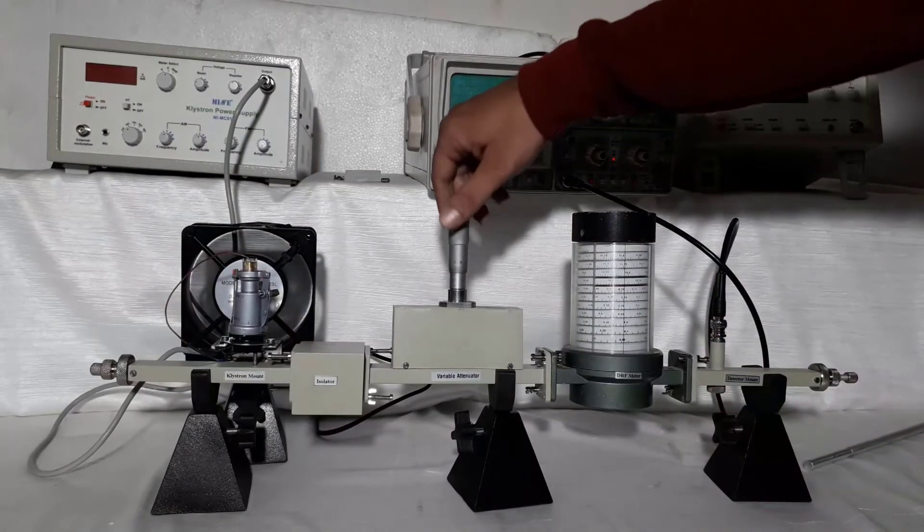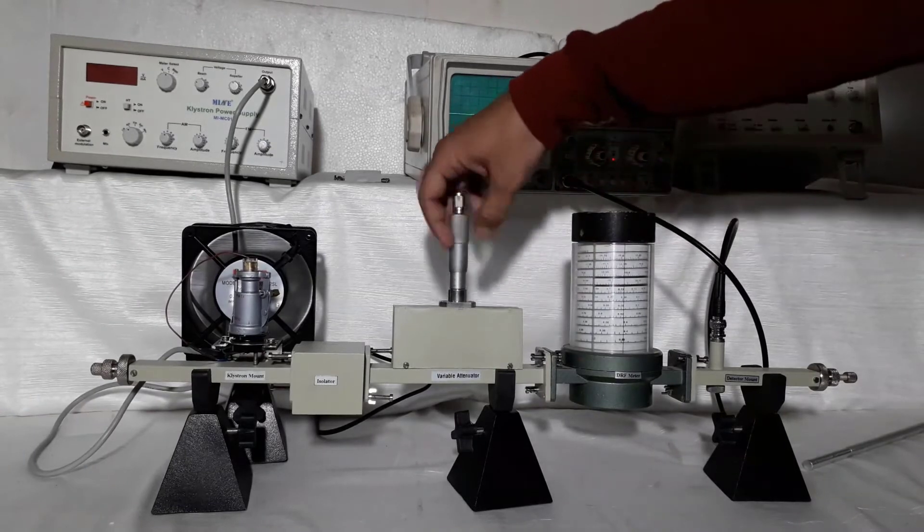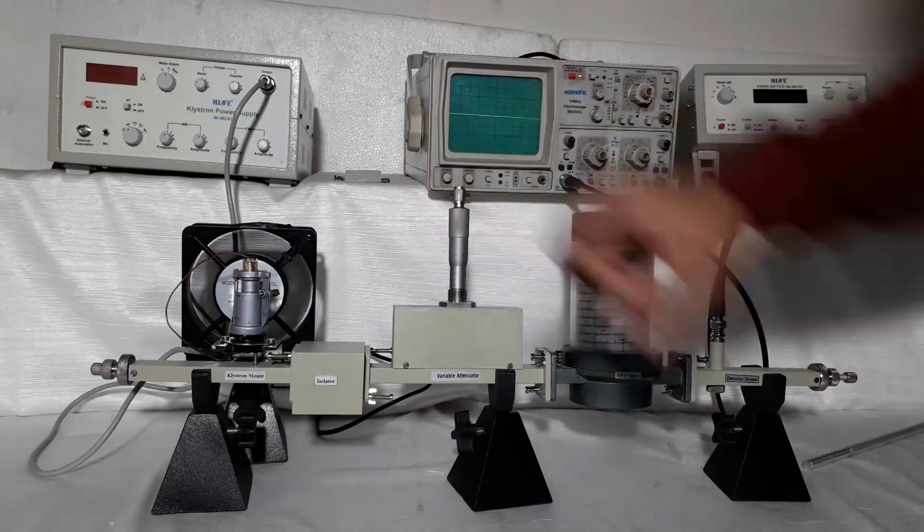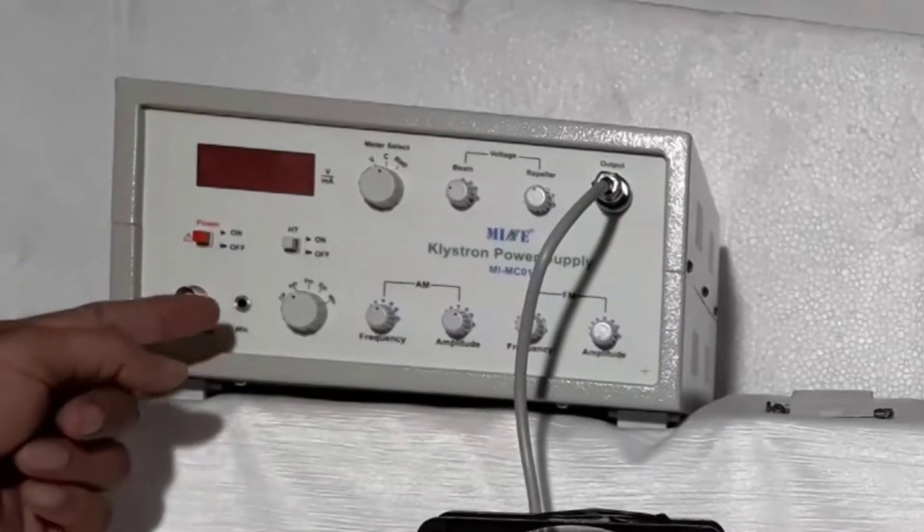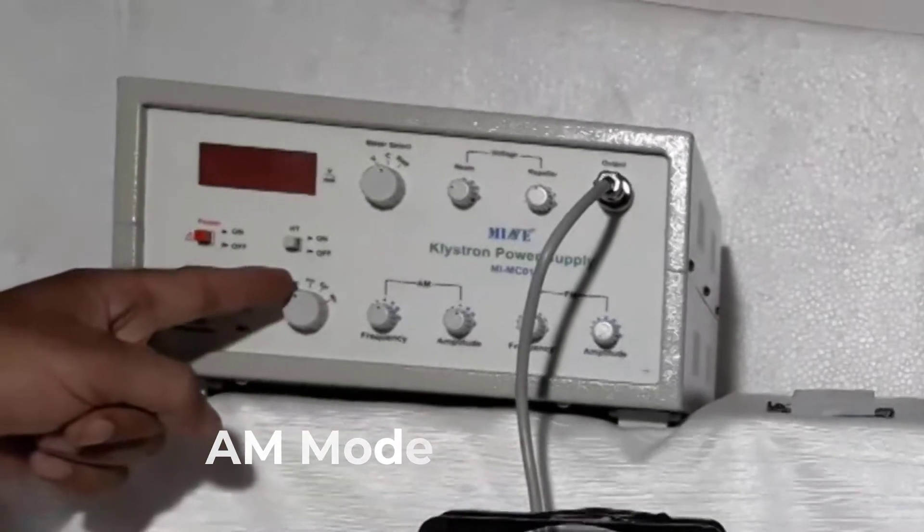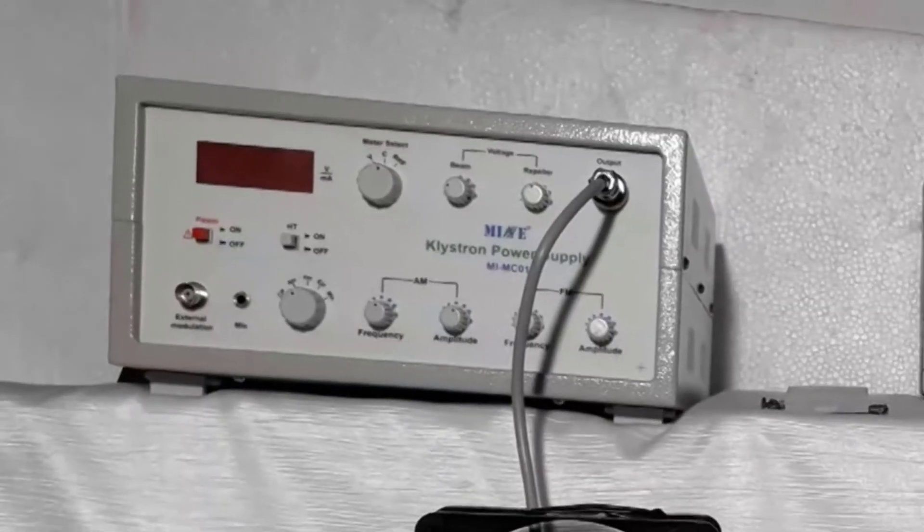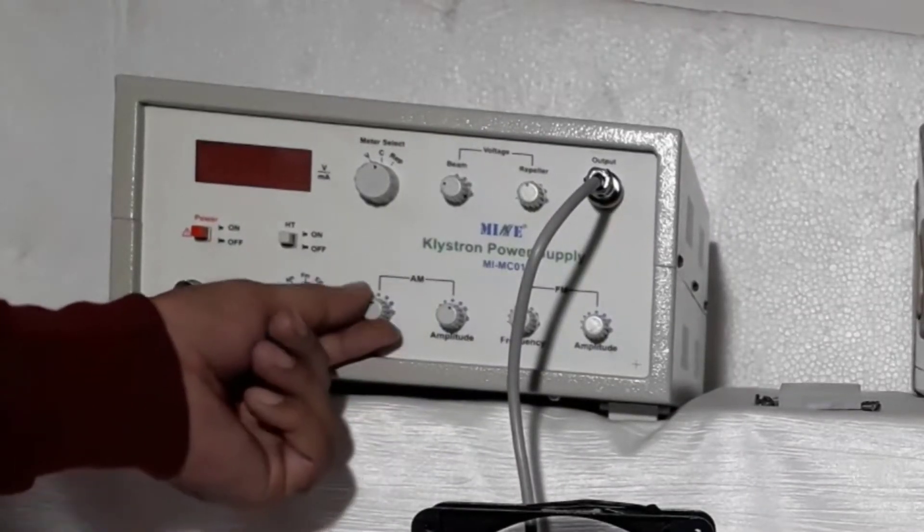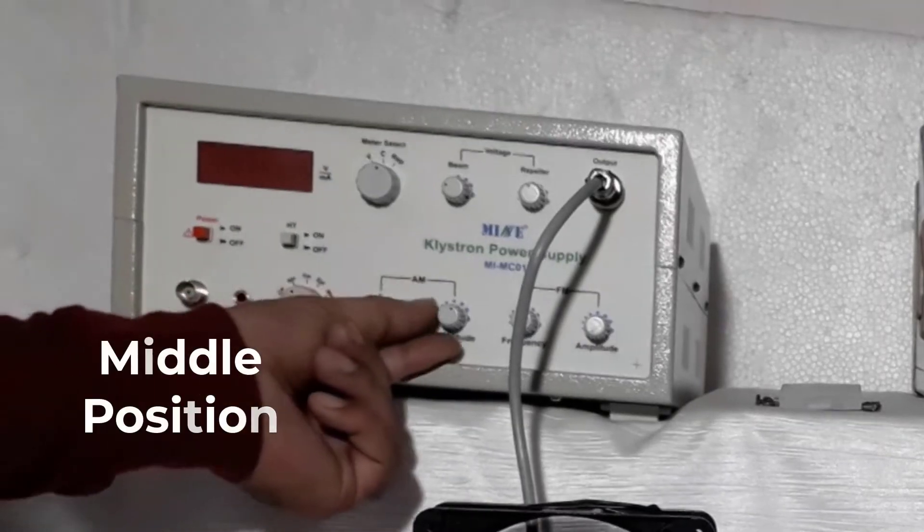Set variable attenuator at no attenuation. Set klystron power supply mode switch at AM. Set frequency and amplitude knob of AM at middle position.